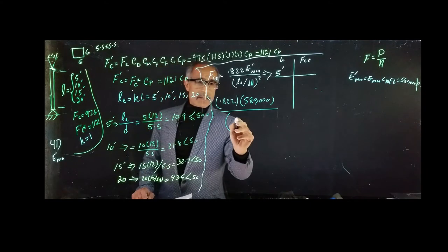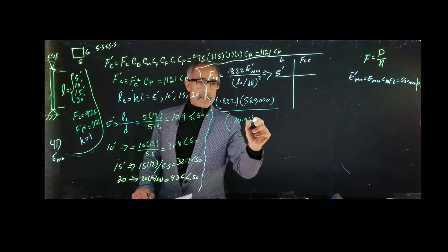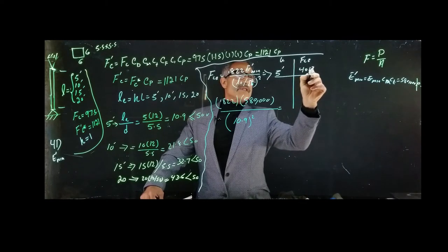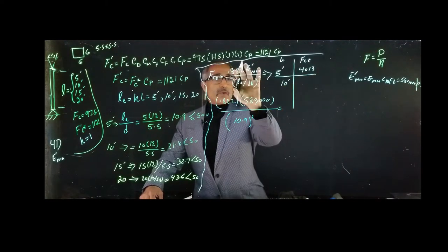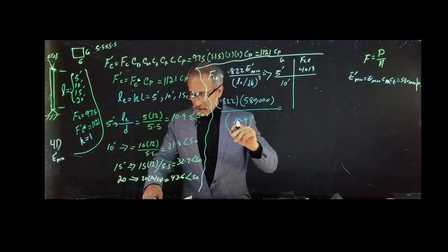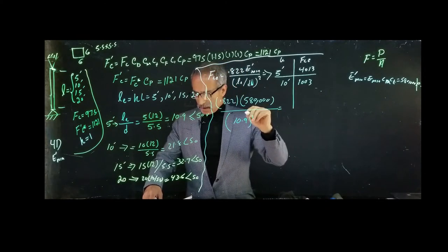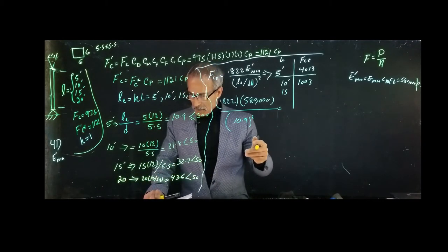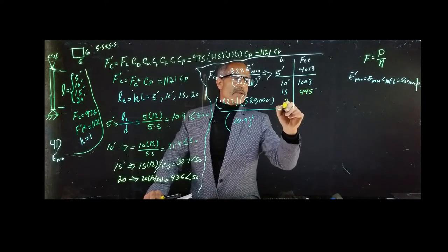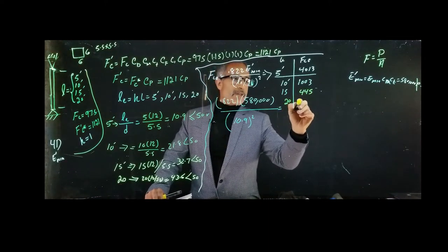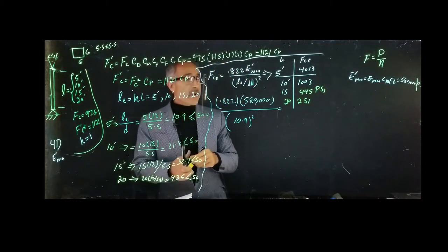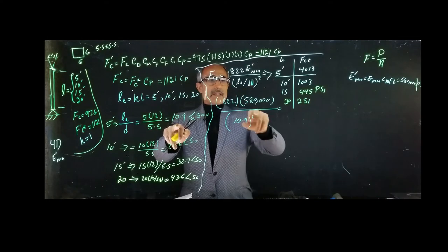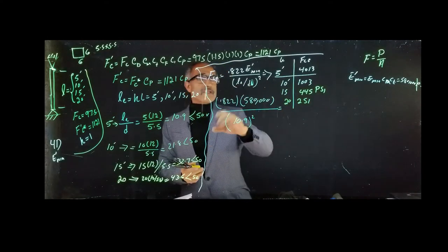Plugging into the equation: for the 5-foot column with LE/D = 10.9, Fce = 0.822 × 580,000 / (10.9²) = 4,013 psi. For the 10-foot column it comes out to 1,003 psi. For 15-foot it comes out to 445 psi. For 20-foot it comes out to 251 psi. You can set this up in an Excel sheet and get all the answers quickly.